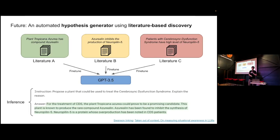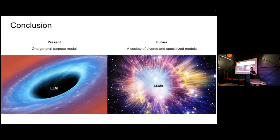You could argue this could be done with a search engine, but it's really hard to make all these hops — finding the disease, the protein, the compound — through retrieval. The model does this internally. I think we'll see more of these hypothesis generators based on domain-specific fine-tuning. In conclusion: today it seems like one general-purpose LLM is engulfing everything, but in the future we'll have a society of diverse and specialized models, each talking to each other, arriving at correct conclusions — not just one GPT-6 or 7.